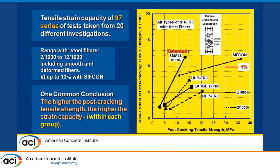Here is a summary of all results: 97 series of tests from 20 different investigations taken over a 35-year period for all strain hardening materials. We see the UHPC groups, the large HPFRC, the small HPFRC, and SIFCON — all satisfying the conclusion that increasing post-cracking tensile strength increases strain capacity.